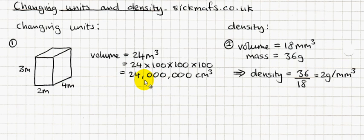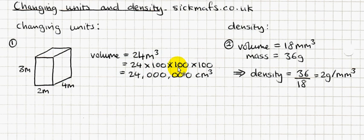If I wanted to convert from meters cubed to millimeters cubed, I would times it by 1,000 and 1,000 and 1,000 — so three zeros, three zeros, and three zeros — because it's 1,000 times 1,000 times 1,000, which means I'm going to add nine zeros. So 24 meters cubed equals 24 billion millimeters cubed.